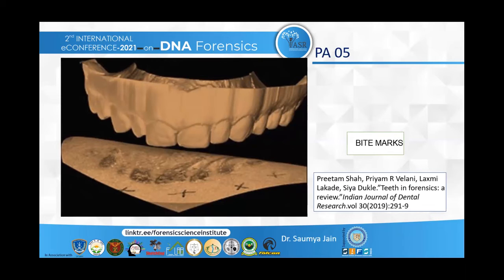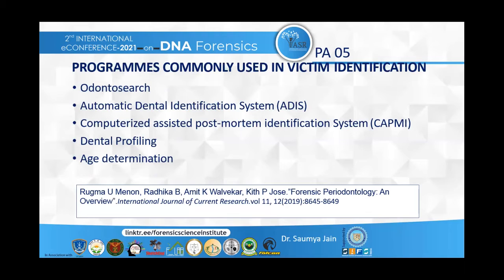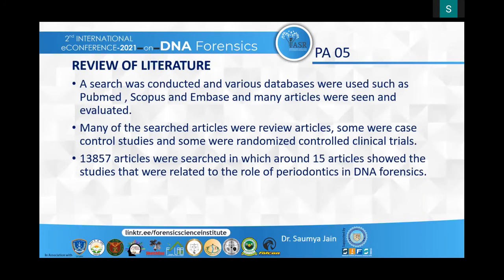Bite marks are also very useful in DNA forensics, particularly in cases of sexual assault, murder, or child abuse. There are programs commonly used in victim identification, such as Odonto Search, the Automatic Dental Identification System (a computer-aided software for post-mortem identification based on dental characteristics, especially radiographs), the Computerized-Assisted Post-Mortem Identification System for rapid identification of human remains by chart screening, dental profiling (which extracts a triad of information: descendants, ethnic origin, gender, and age), and age determination.